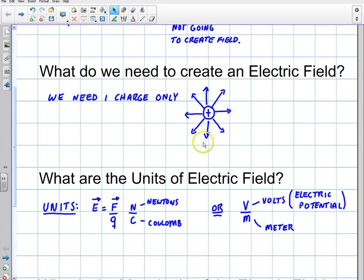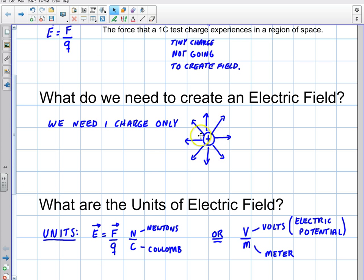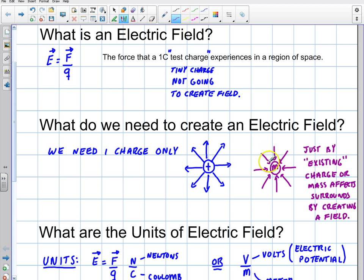Same thing's true with mass. When we have mass, we have a field that would go in. I drew a mass here. With a mass, the field is always going to be in, but with a charge, the field could be in or out, depending on the charge. So just by existing, a charge or a mass affects the surroundings by creating a field. Just the fact that a mass exists, it's going to create a gravitational field going in towards it.